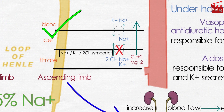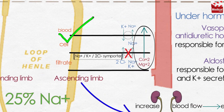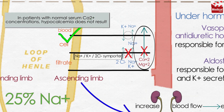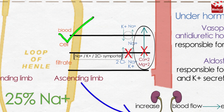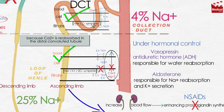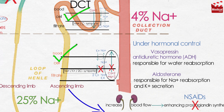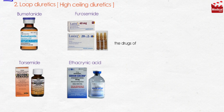Due to normal reabsorption, there is a certain voltage that causes calcium and magnesium ions to move from the tubular lumen to the blood through interstitial spaces. By using loop diuretics, sodium and potassium reabsorption are inhibited, leading to inhibition of calcium and magnesium reabsorption. In patients with normal serum calcium concentrations, hypocalcemia does not result, because calcium is reabsorbed in the distal convoluted tubule.